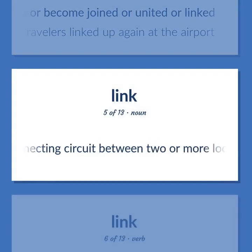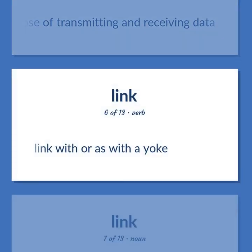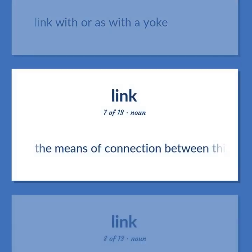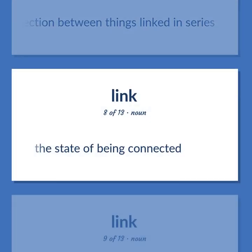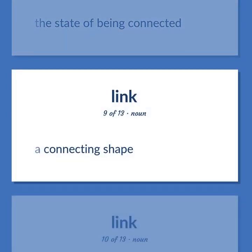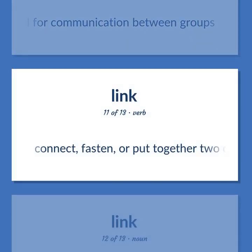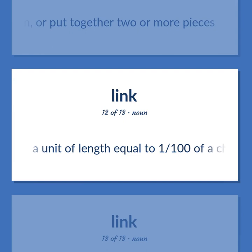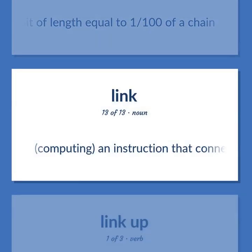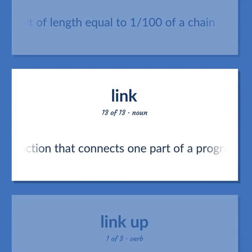Link: An interconnecting circuit between two or more locations for the purpose of transmitting and receiving data. Link with or as with a yoke. The means of connection between things linked in series. The state of being connected. A connecting shape. A channel for communication between groups. Connect, fasten, or put together two or more pieces. A unit of length equal to one one-hundredth of a chain. Computing: an instruction that connects one part of a program or an element on a list to another program or list.